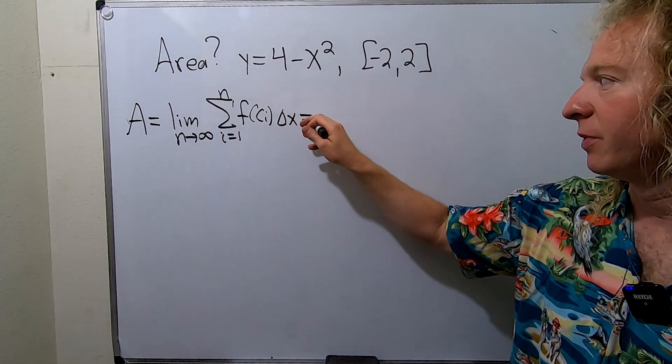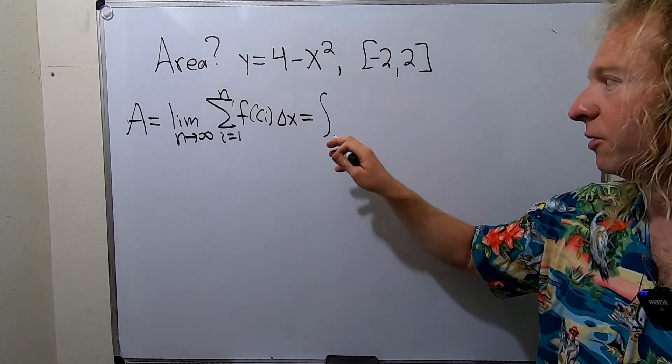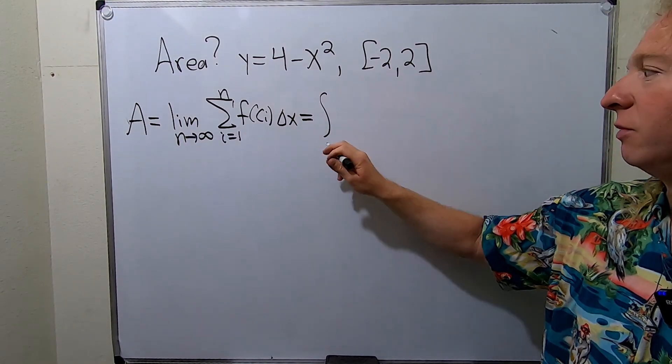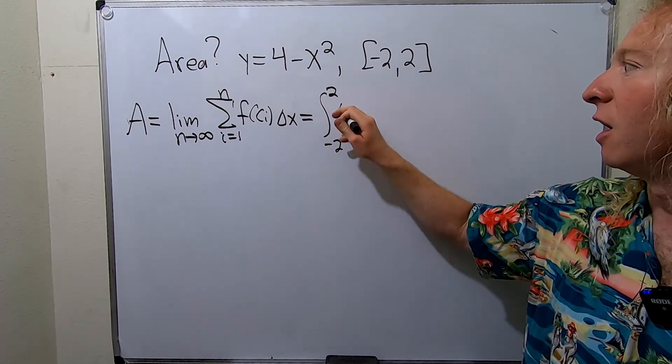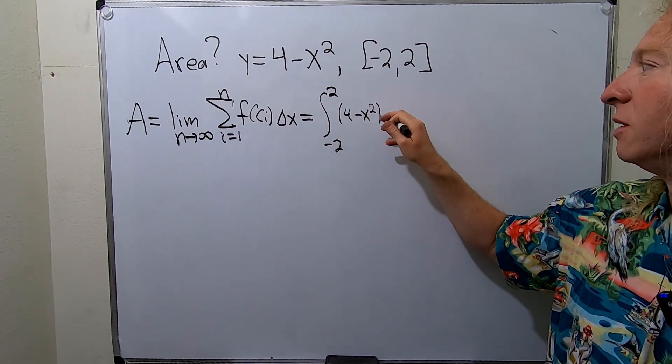This is also equal to something called the definite integral from negative 2 to 2 of 4 minus x squared dx.